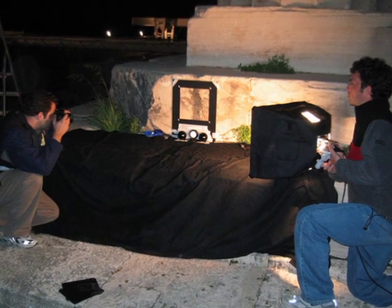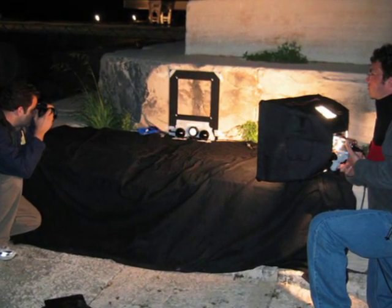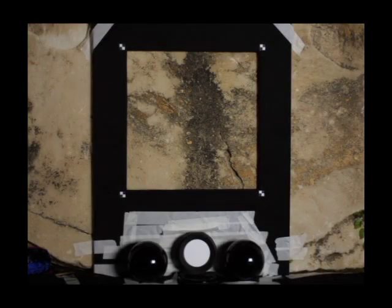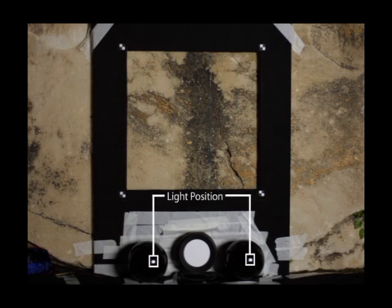To have the computed reflectance properties best represent the actual environment, we identified an area of the scene that exhibited a representative range of reflectance properties for BRDF measurement. We placed a calibration frame around the sample, which provided fiducial markers to derive the camera position, glossy black spheres to derive the light source position, and a reflectance standard to indicate the light source intensity.